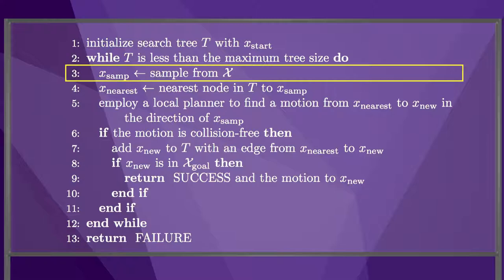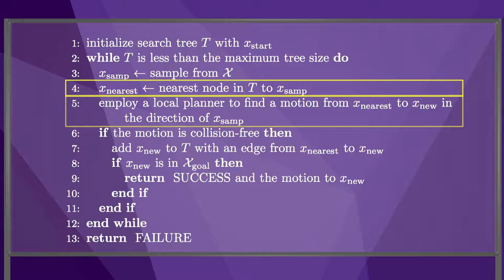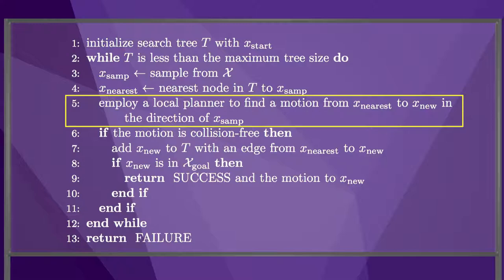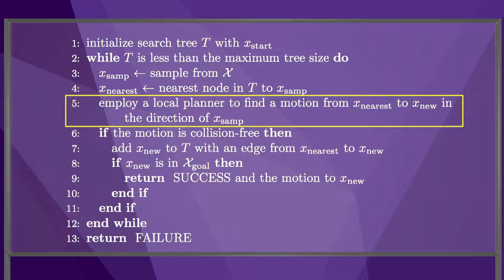This is pseudocode for the RRT algorithm. In line 3, we sample from the state space. In line 4, we find the nearest node already in the tree. In line 5, we use a local planner to find a motion from this nearest node to a state closer to the sampled state.